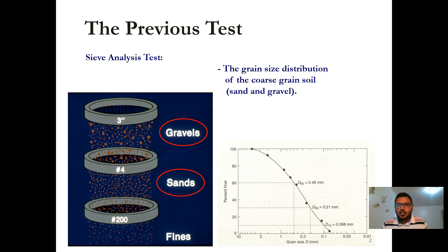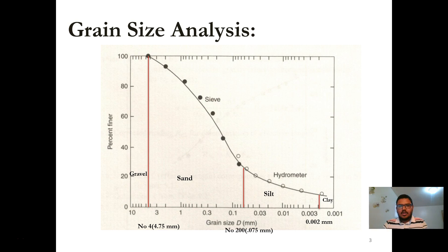In the previous experiment, we determined the grain size distribution of coarse-grained soil by sieve analysis method. Soil particle diameter less than 0.075 mm is known as fine-grained soil, whereas greater than 0.075 mm is known as coarse-grained soil.